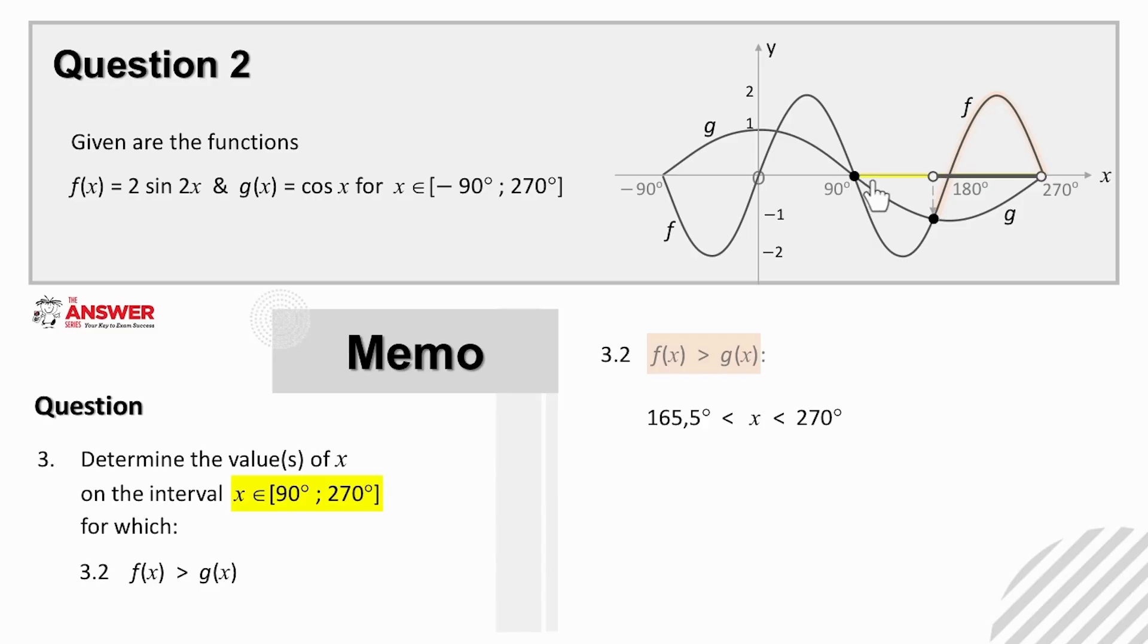The interpretation for this particular inequality is that it is asking us for which values of x is f above g in this interval. And if we take a look at the graphs, we can in fact read off the solution. See, f lies above g between 165.5 degrees and 270 degrees.